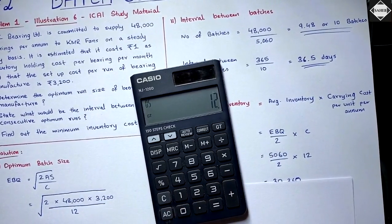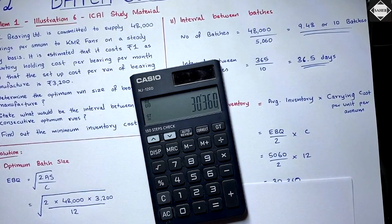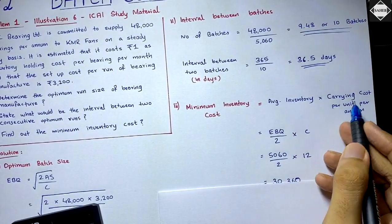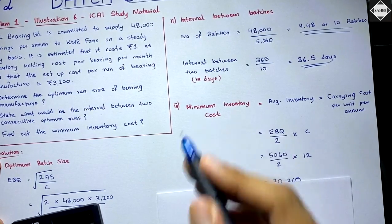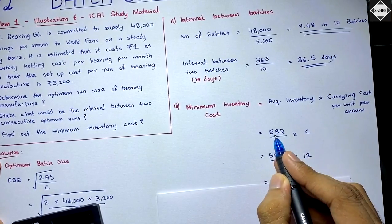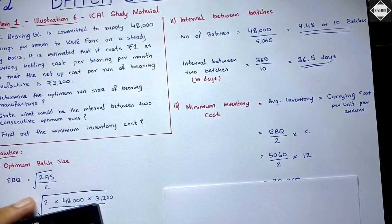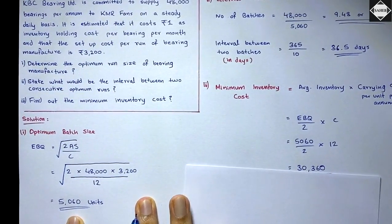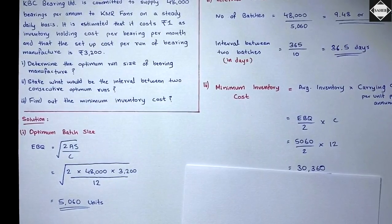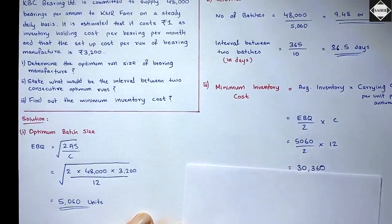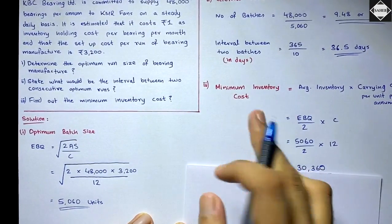So: (5,060 ÷ 2) × ₹12 = ₹30,360. This is the total carrying cost. They call it minimum inventory cost because at EBQ the carrying cost is minimized. If you choose a different batch size, say 3,000 units, you will incur unnecessary inventory cost and it will be higher.